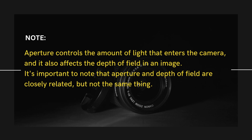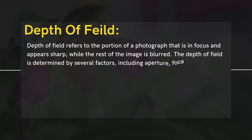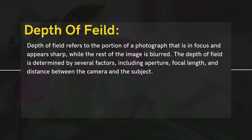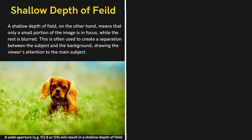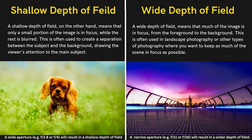It's important to note that aperture and depth of field are closely related but not the same thing. Depth of field refers to the portion of a photograph that is in focus and appears sharp, while the rest of the image is blurred. It is determined by several factors including aperture, focal length, and distance between the camera and the subject. A shallow depth of field means only a small portion of the image is in focus, often used to create separation between the subject and the background. A wide depth of field means much of the image is in focus from foreground to background, often used in landscape photography.